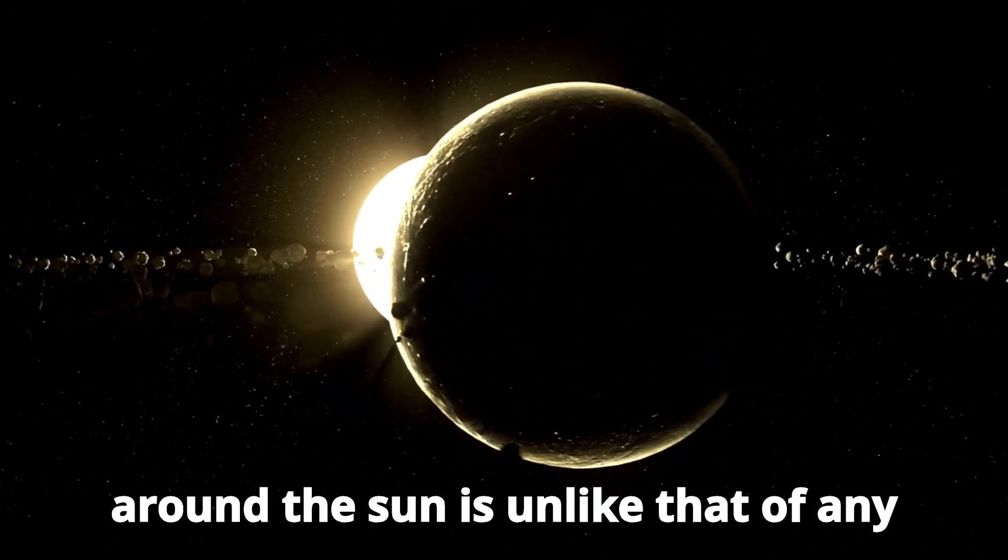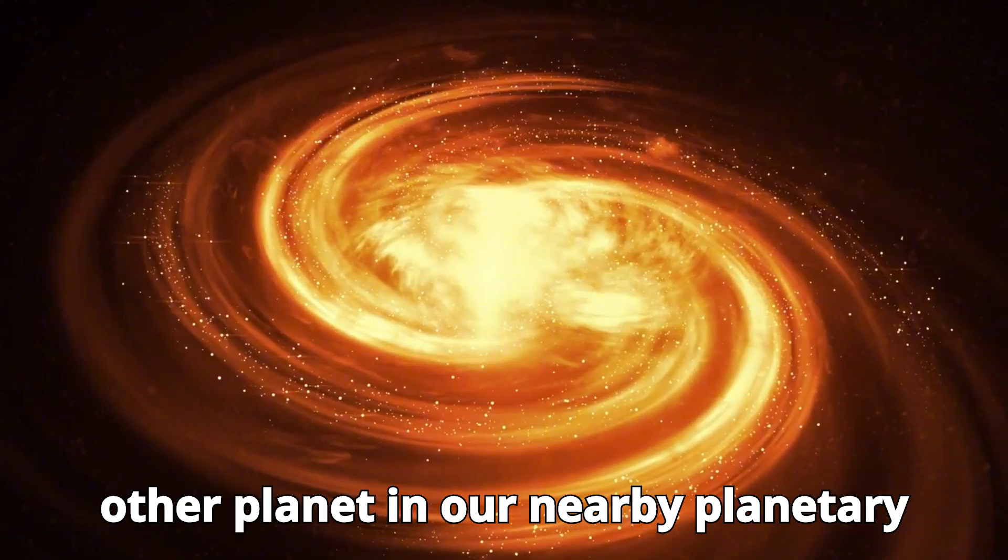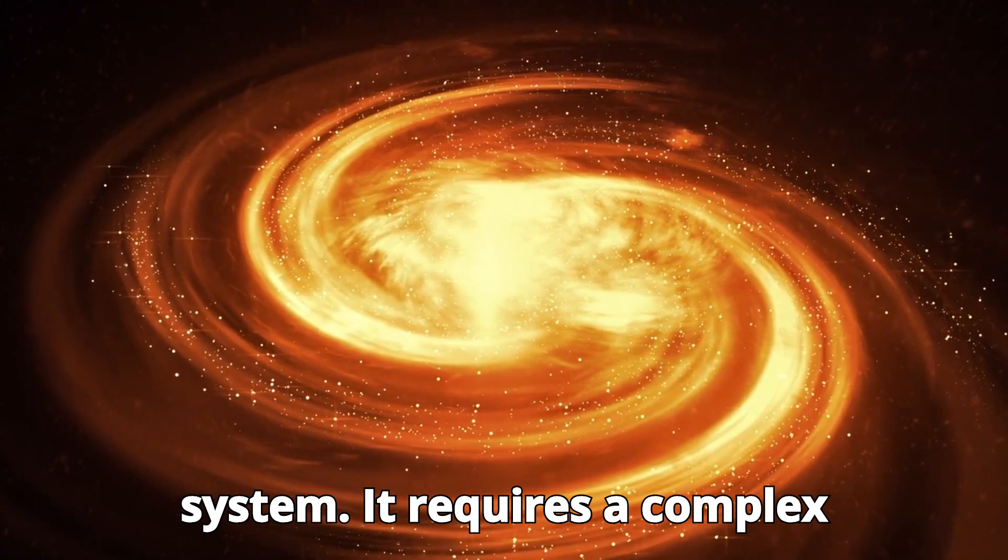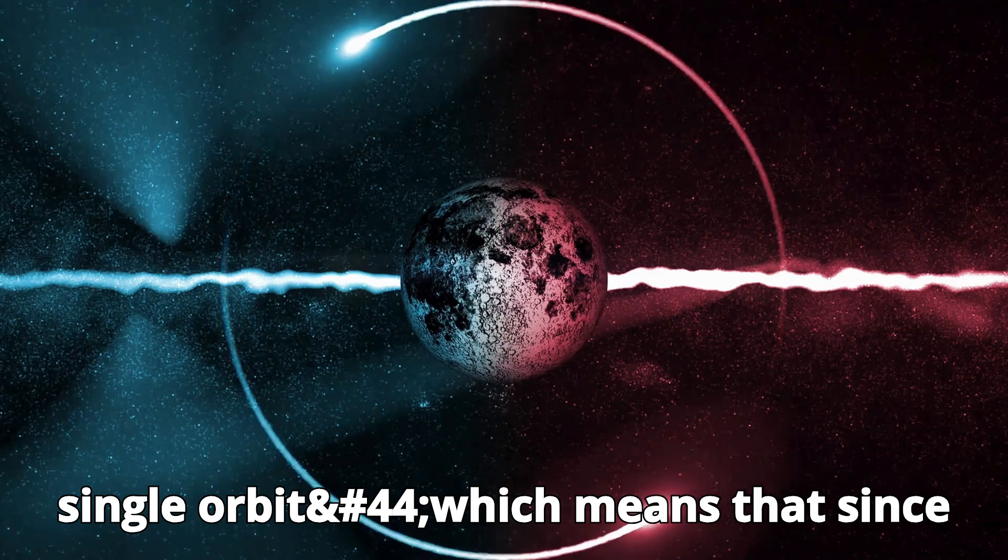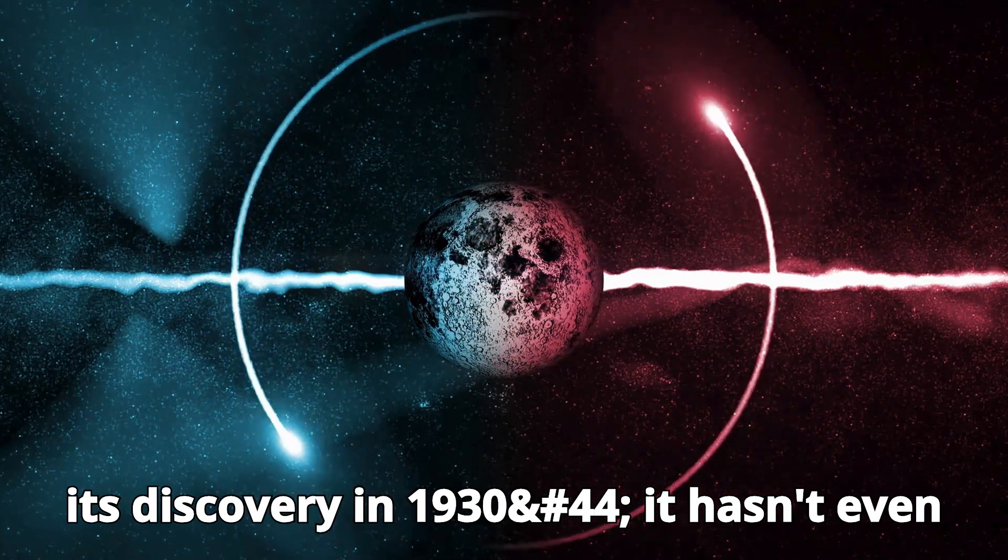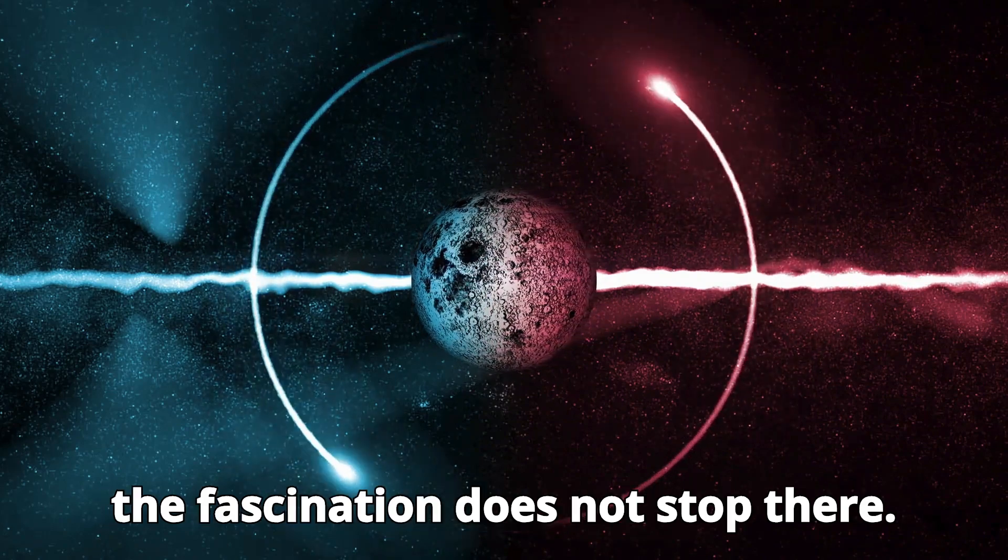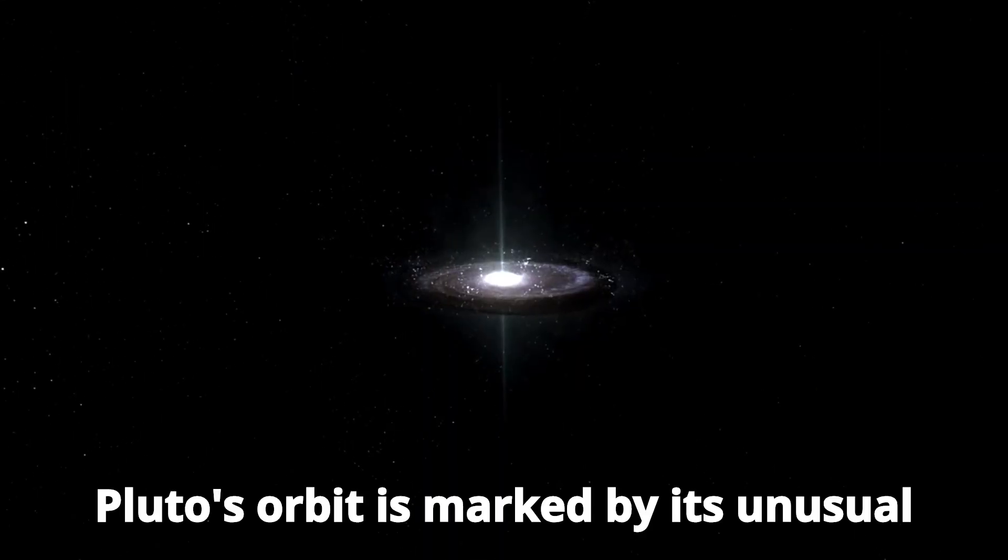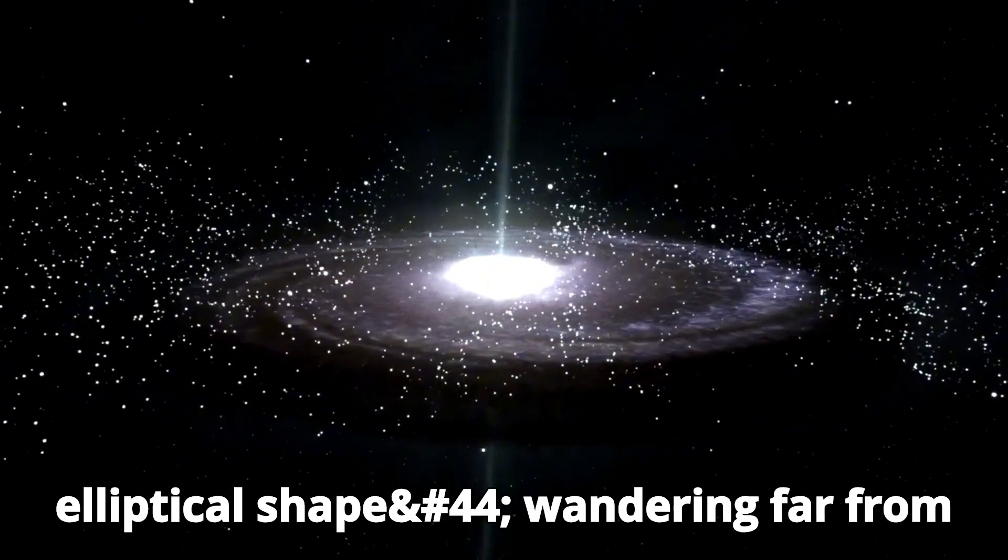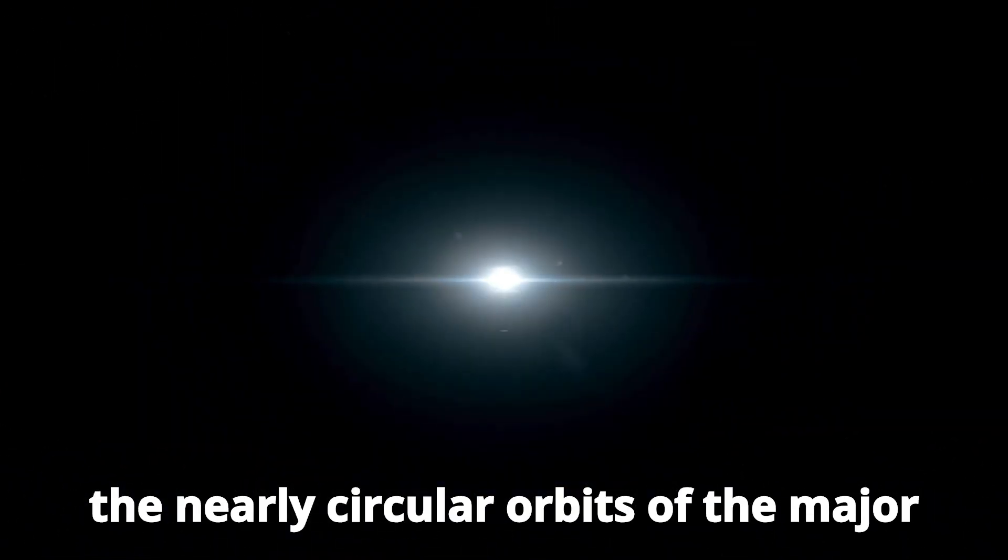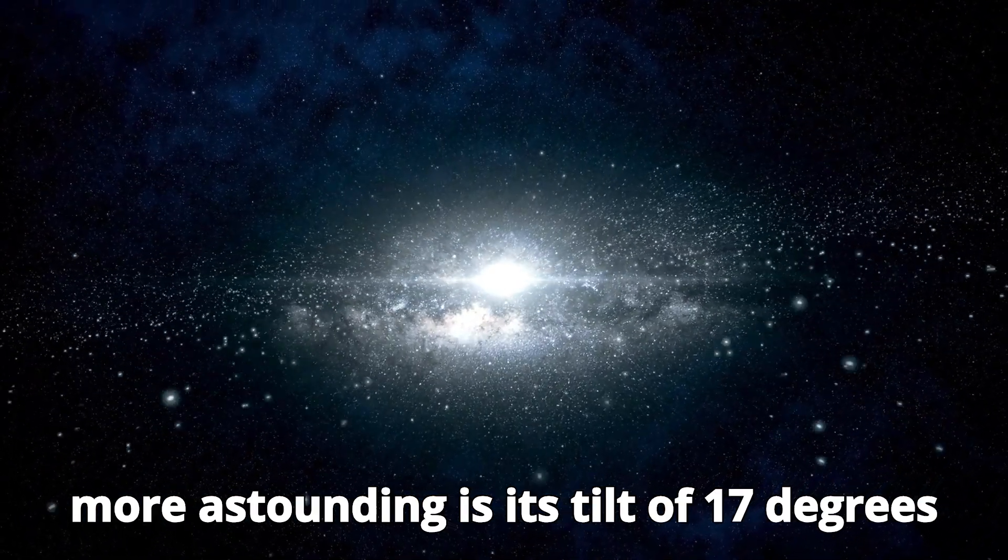How is such an event even possible? Pluto's journey around the Sun is unlike that of any other planet in our nearby planetary system. It requires a complex 248 years to complete a single orbit, which means that since its discovery in 1930, it hasn't even finished one full revolution. Yet the fascination does not stop there. Pluto's orbit is marked by its unusual elliptical shape, wandering far from the nearly circular orbits of the major planets.